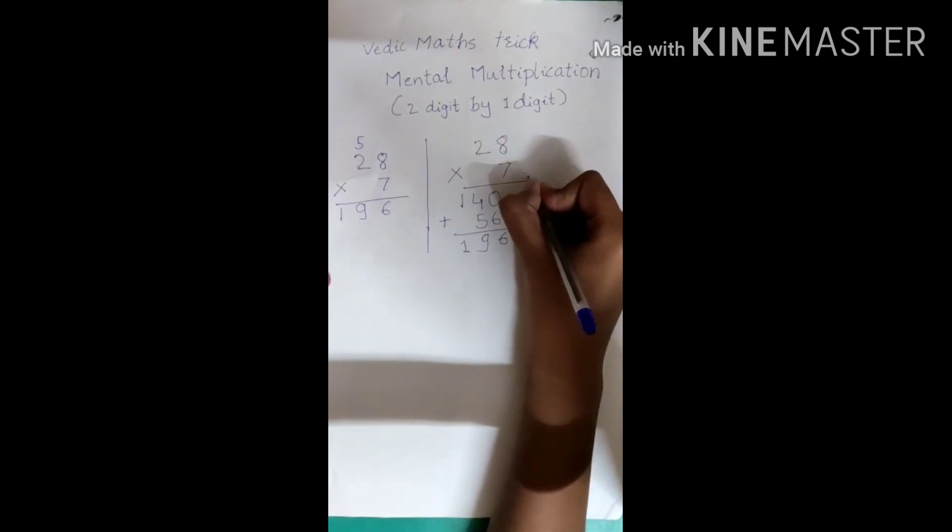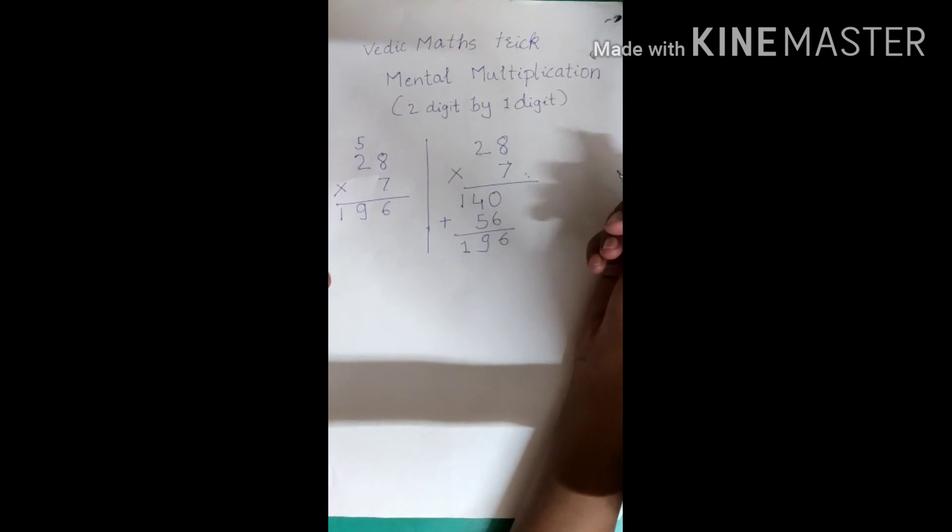So by this trick, we can do multiplication mentally and if anyone asks us dodging table, we are able to give correct answer at any time.